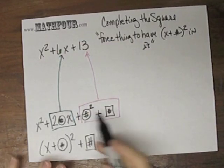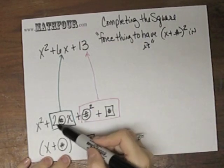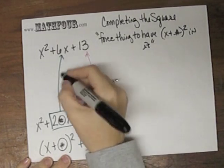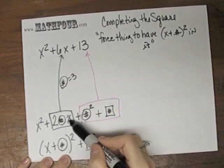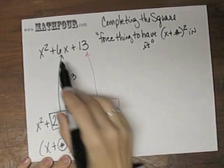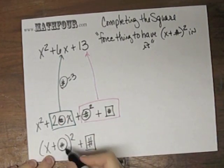So then you ask yourself, okay, so 2 times what is 6? Well, that means this is 3, right? So 2 times 3 is 6. So this piece is 3.